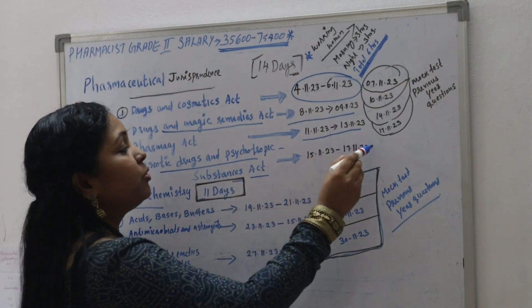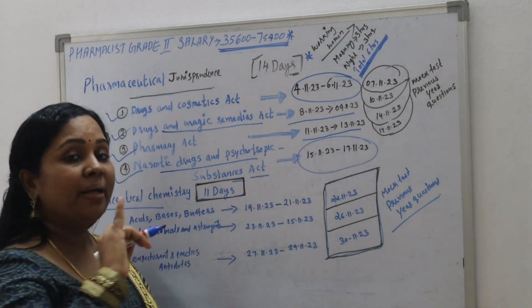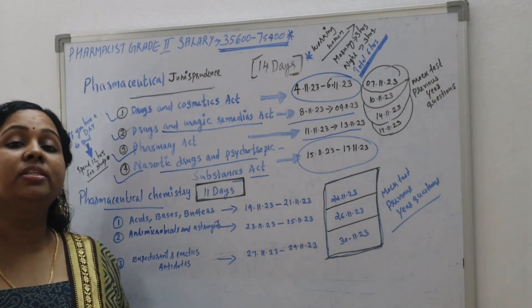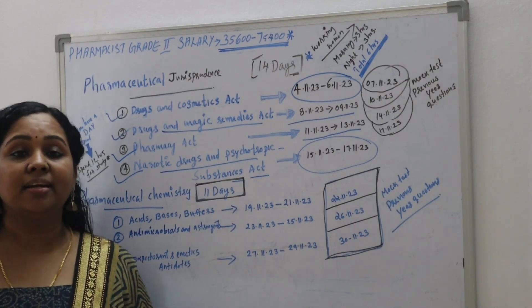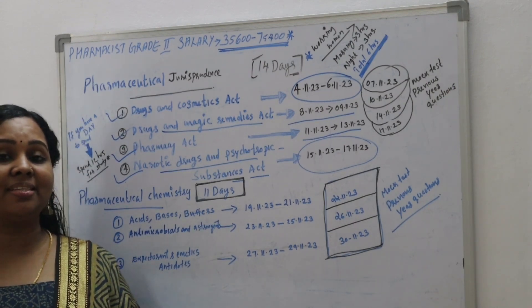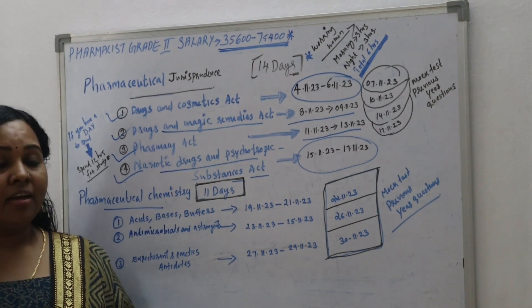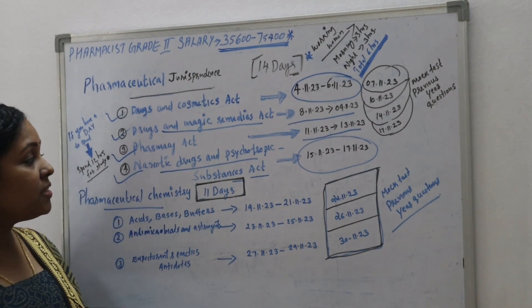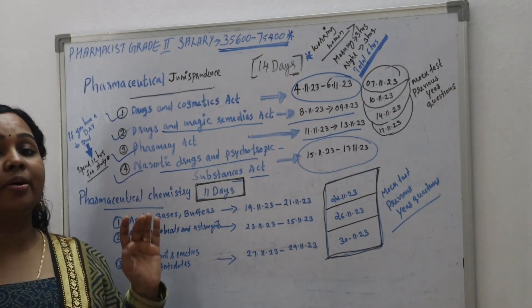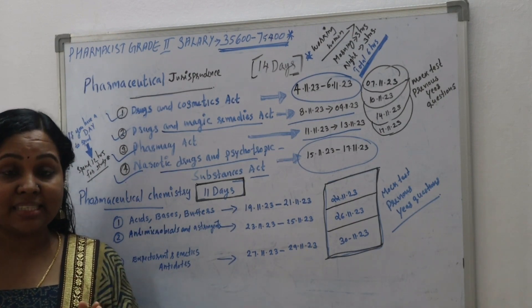You have finished the Narcotic Drugs and Psychotropic Substances Act — the marketing act portion. At this point, the Narcotic Drugs and Psychotropic Substances Act is complete.